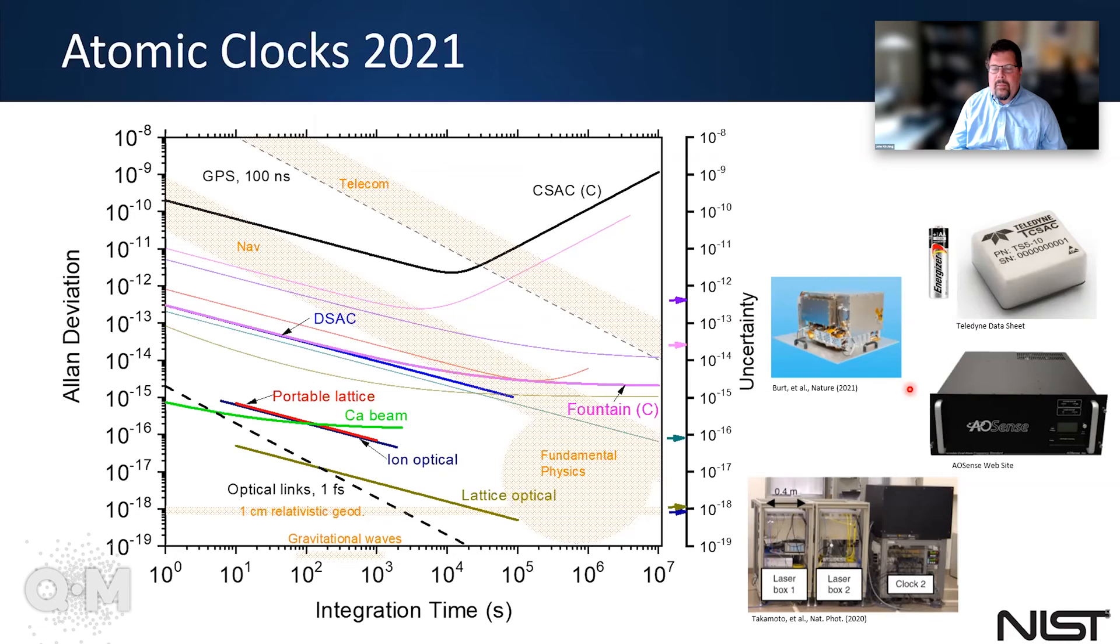We now have commercial clocks based on laser cooled atoms that are increasing in terms of accuracy. We have ion clocks that are being developed for space applications and that could be important in next generation GPS systems.